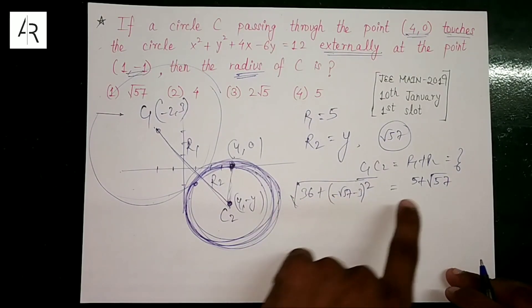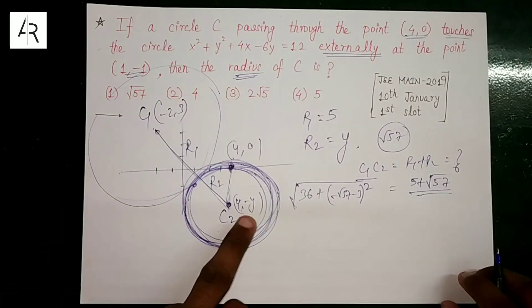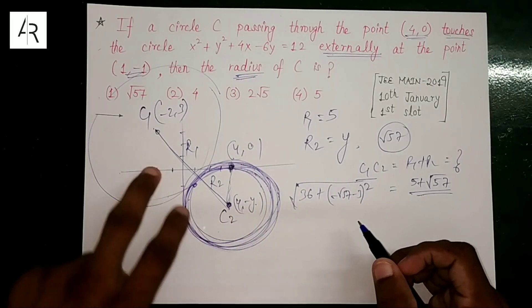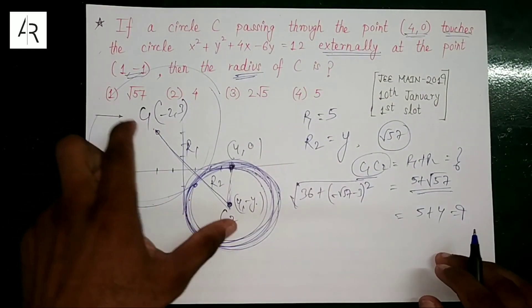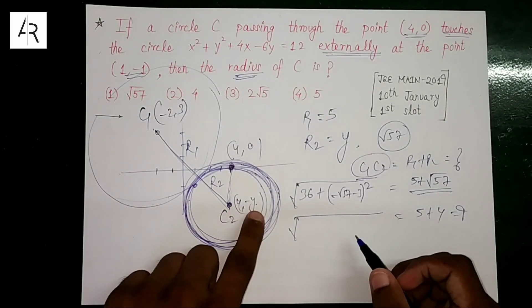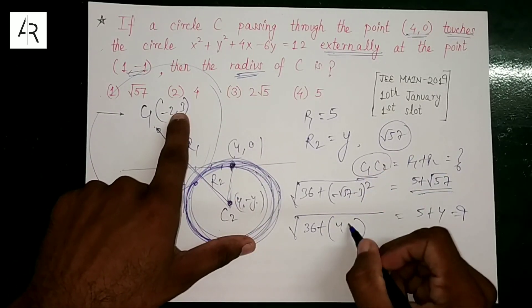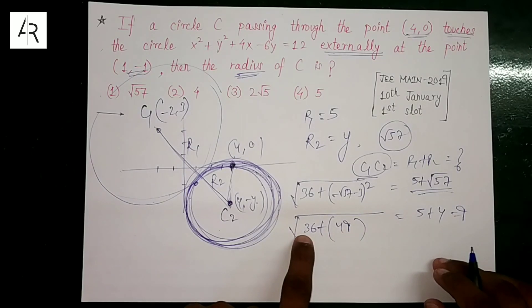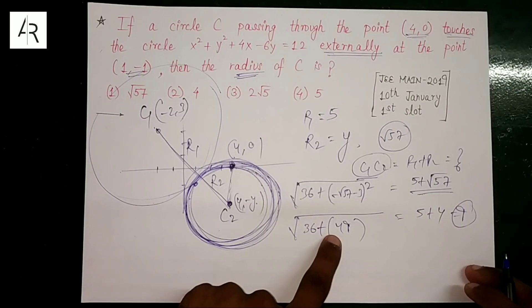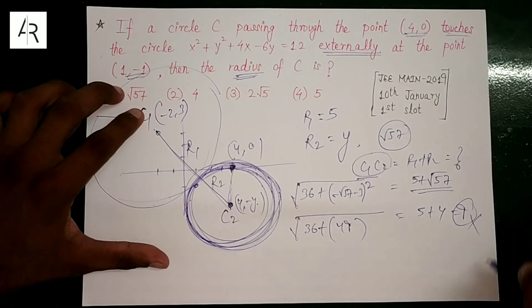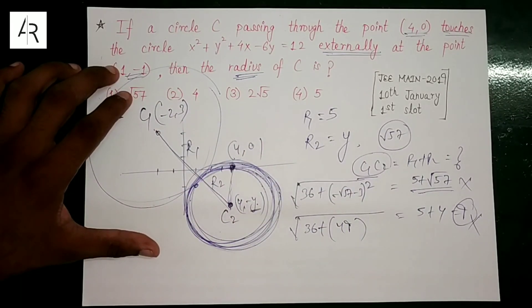The value C1C2 is not coming equal to r1 + r2 for root 57. If you doubt, check it. With r2 = 4, second case: r1 + r2 = 5 + 4 = 9. So check if C1C2 = 9. Calculate: center of C is (4, −4), so C1C2 = root of ((4−(−2))² + (−4−3)²) = root of (36 + 49) = root of 85. Root 85 ≠ 9. So this option is wrong.